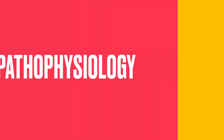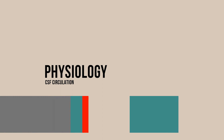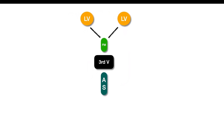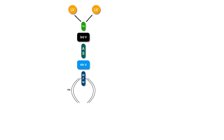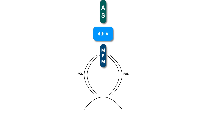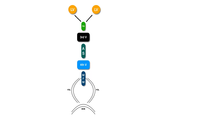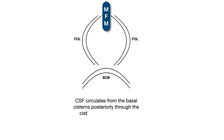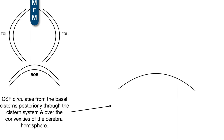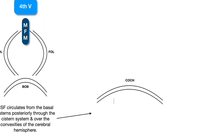Now let's learn the pathophysiology, starting with the physiology of CSF circulation. CSF travels from the lateral ventricles through the foramen of Monro and drains into the third ventricle. It then crosses the narrow aqueduct of Silvius and pours into the fourth ventricle. It exits via the paired midline foramen of Magendie and foramen of Luschka, goes into the cisterns at the base of the brain, circulates through the cistern system over the convexities of the cerebral hemisphere, and is absorbed by arachnoid villi and lymphatic channels.